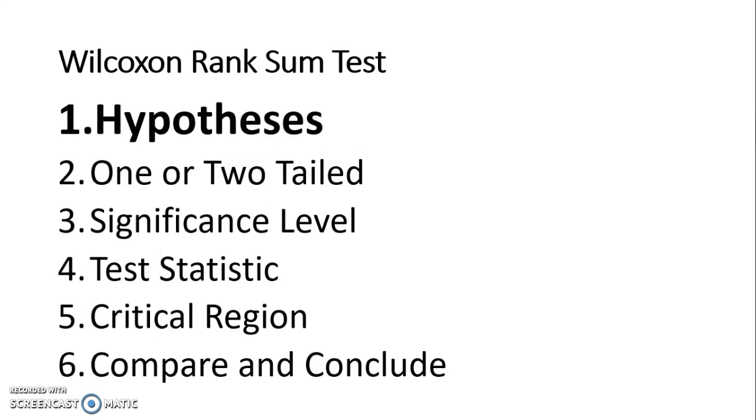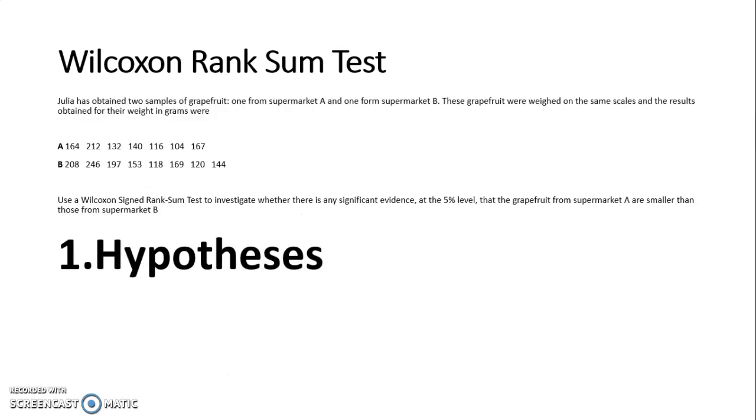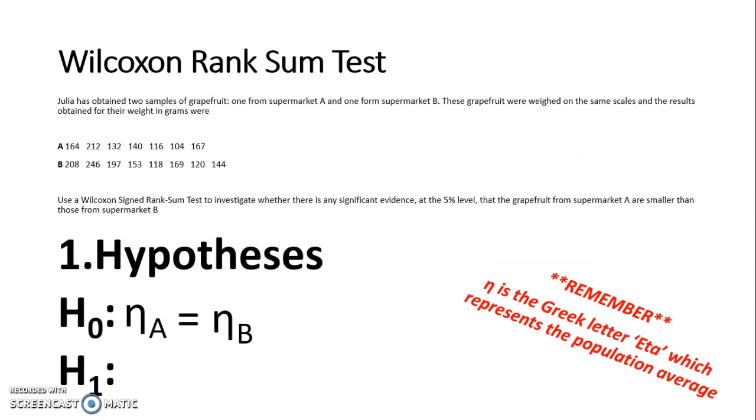So let's start by looking at our hypotheses. We always need a null and an alternative hypothesis called H0 and H1. And as we have done with several of these questions, we need to use eta. And our null hypothesis is always eta A equals eta B or whatever our two criteria are. So for this one, eta supermarket A equals eta supermarket B. And again, that reminder there on the right that the Greek letter eta is this N, which is elongated on the right hand side. And that represents the population average.